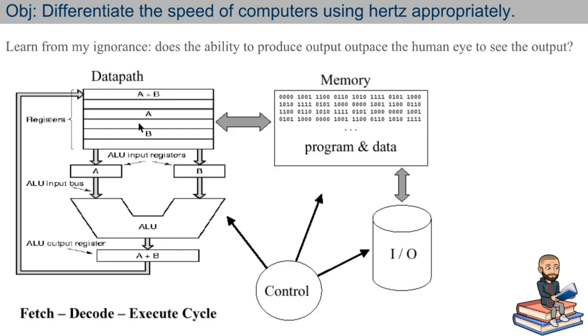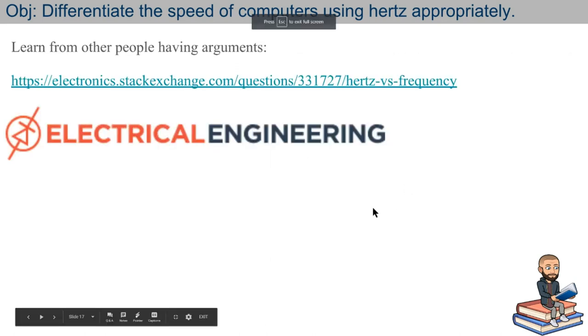So I'm going to ask a question here, going out on a limb. I don't mind if you see my own ignorance. What this lesson got me thinking is, I wonder if a computer can produce output that outpaces the human eye to see that output. And I was tempted to try to teach this lesson by saying hertz is the number of outputs you can see or have in a computer. But a better description is just, hertz is the number of instructions that a computer can fetch, decode, and execute.